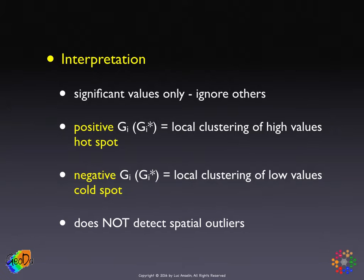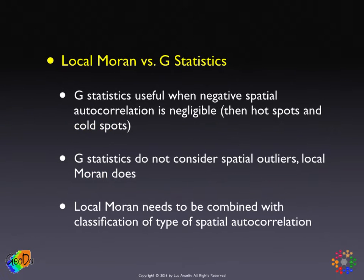Because there is no cross product, the statistic is not designed to detect spatial outliers. How do the two approaches compare — the local Moran versus the GI statistic? In most applications, results are very similar. However, because the GI statistic does not consider spatial outliers, it is most useful when you don't have any — that is, when the focus is really on hot spots and cold spots. In some circumstances, spatial outliers may be important, and often they warrant further attention precisely because they are so different from their neighbors.